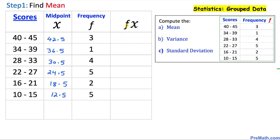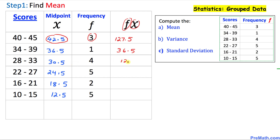In the next column we are going to multiply the frequency f by the midpoint x. The frequency is 3 times 42.5, which gives us 127.5. Next, 1 times 36.5 gives us 36.5, and the next one gives us 122.